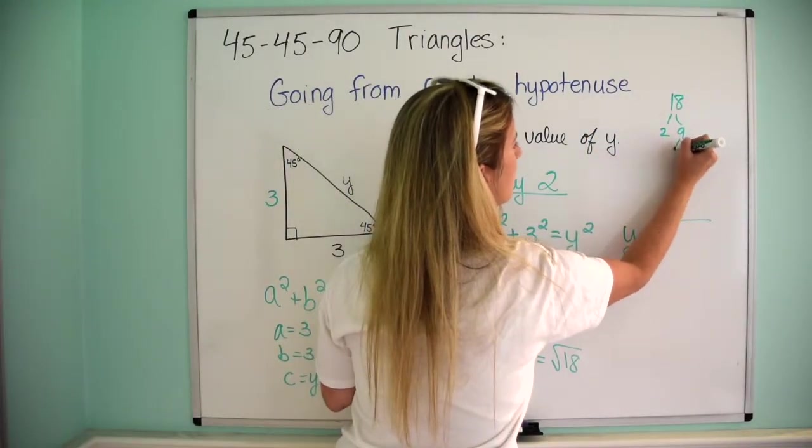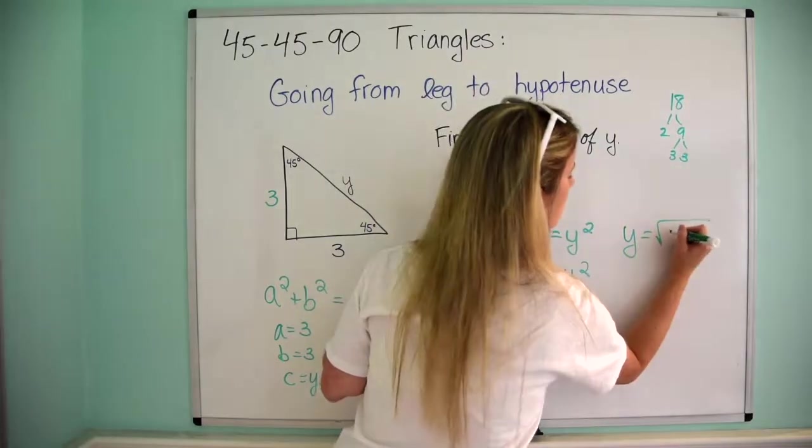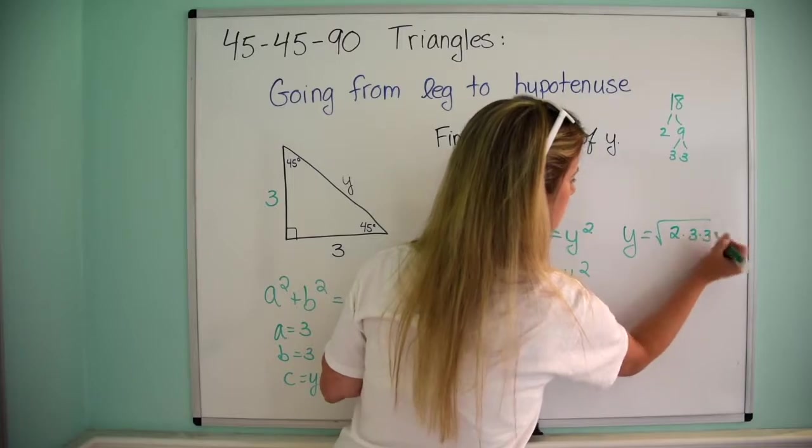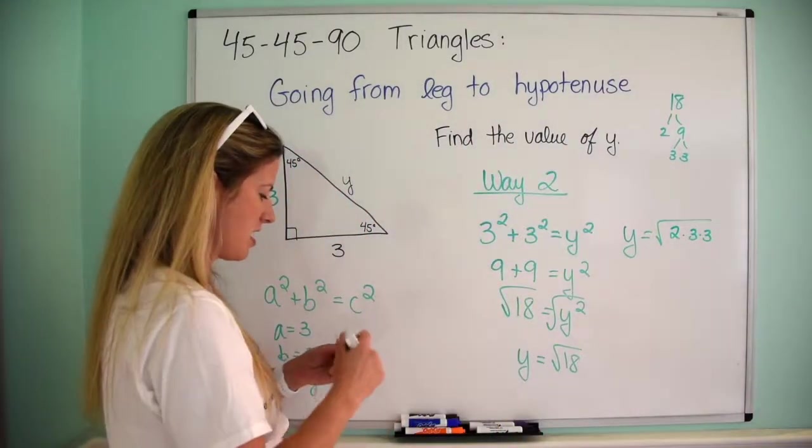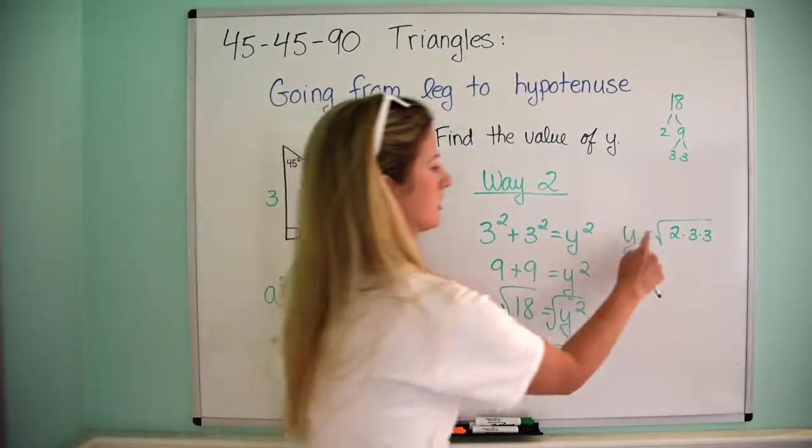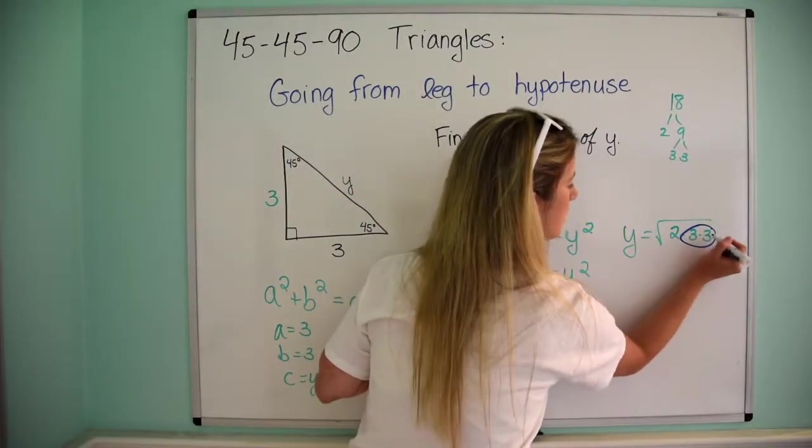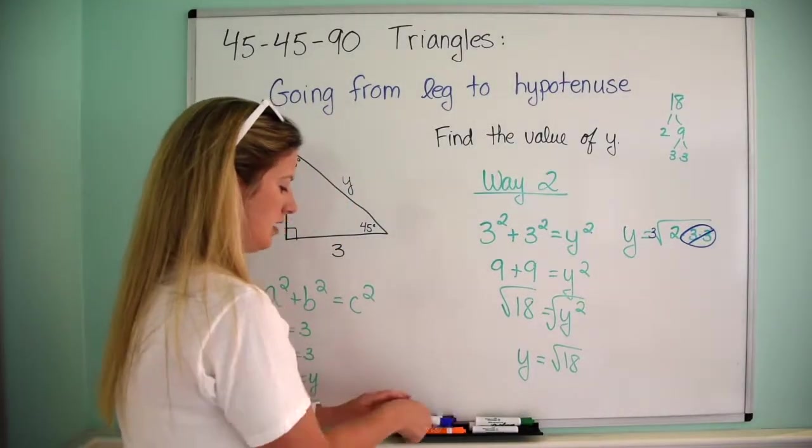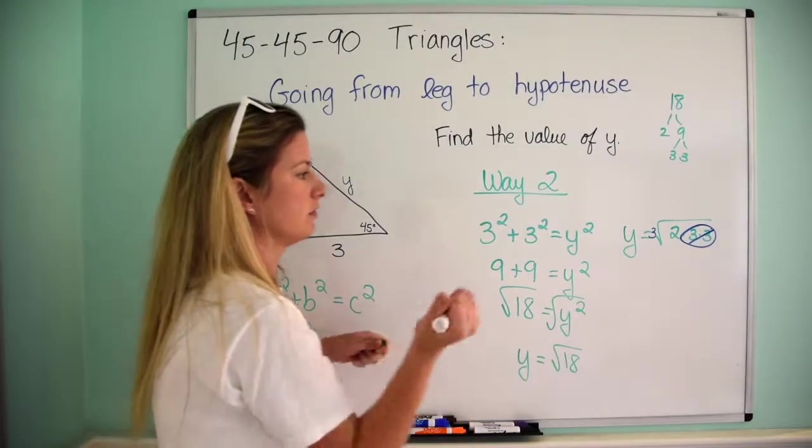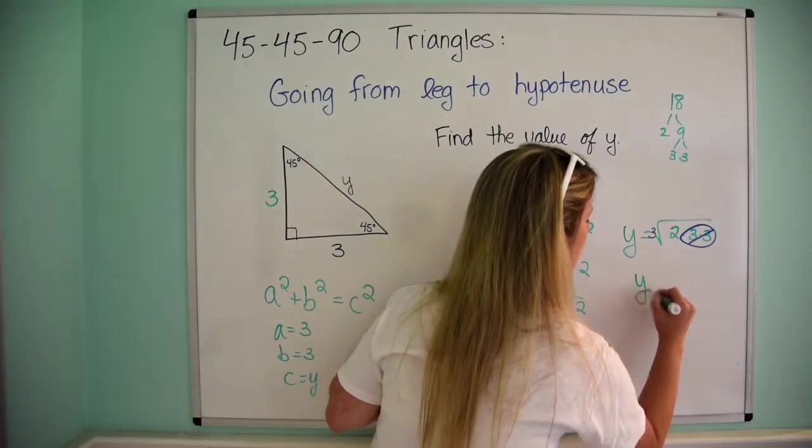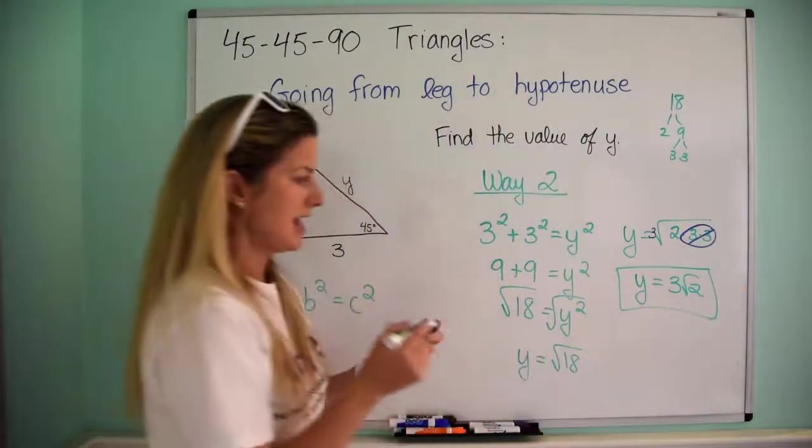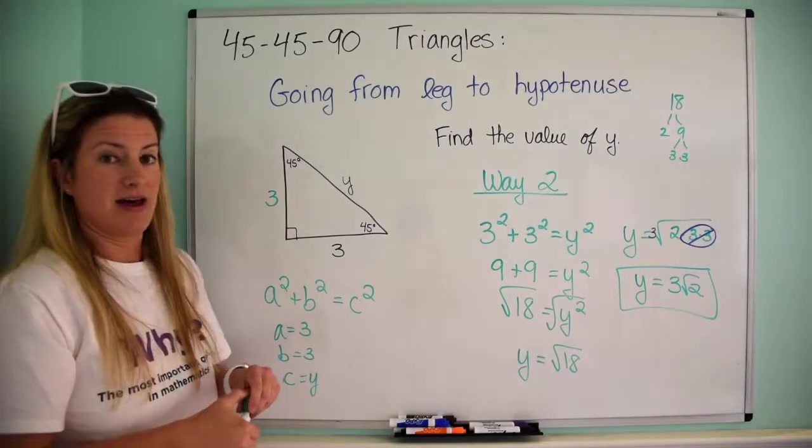So I can write it as 2 times 3 times 3. So remember, I don't have a lot of room here but that's okay. Remember because it's square root, for every pair you cross it out and pull one outside. Again, you can watch that video if you want a refresher here. So then it becomes y equals 3 root 2, awesome.